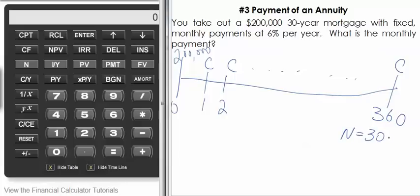Number of years is 30, and you have 12 months every year. The periodic interest rate is 6% divided by 12.